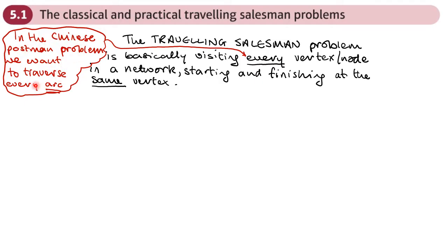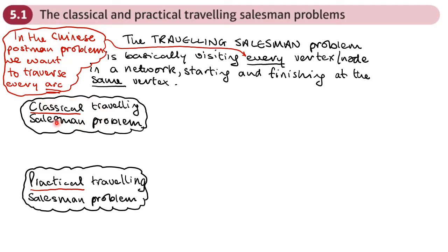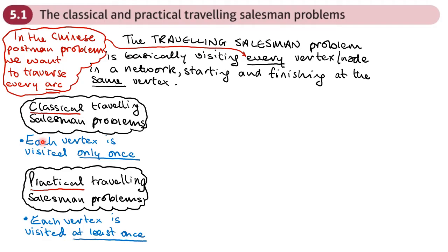The Chinese Postman Problem is about traversing every arc. Now we're going to look at the difference between the classical Travelling Salesman Problem and practical Travelling Salesman Problems. In the classical Travelling Salesman Problem, each vertex is visited only once. In a practical Travelling Salesman Problem, each vertex is visited at least once. In reality, it may not be practical to visit every vertex only once, so we may have to visit some vertices more than once, because there is no efficient algorithm to solve this problem.